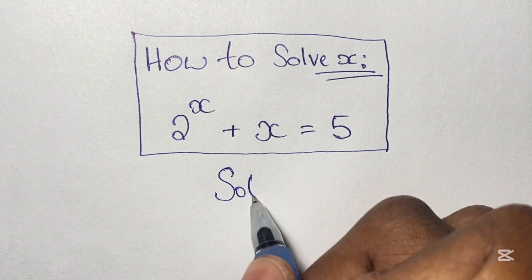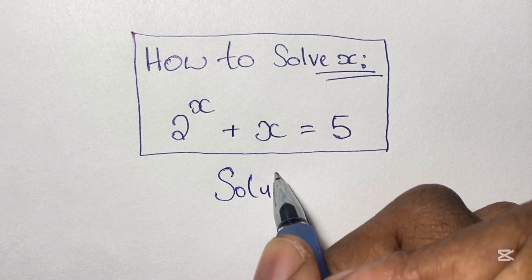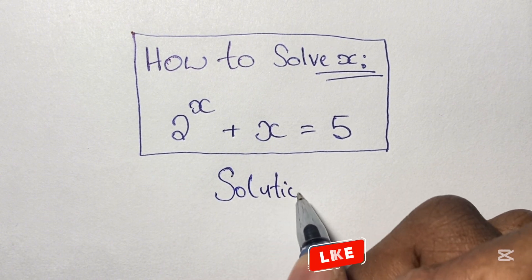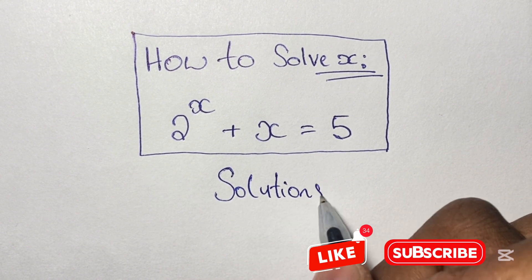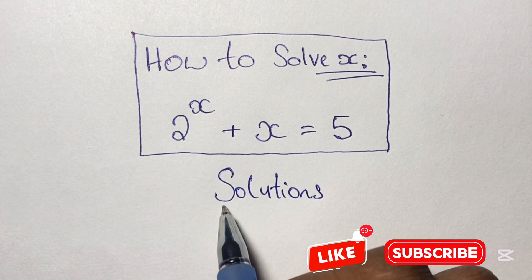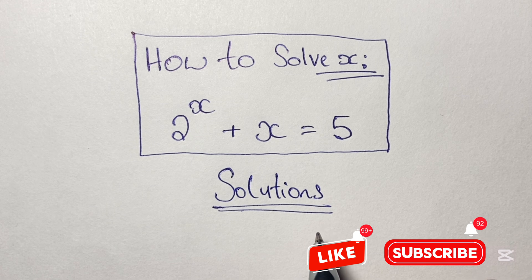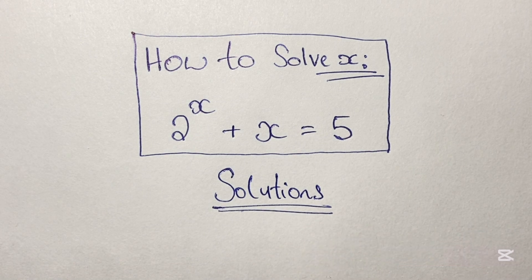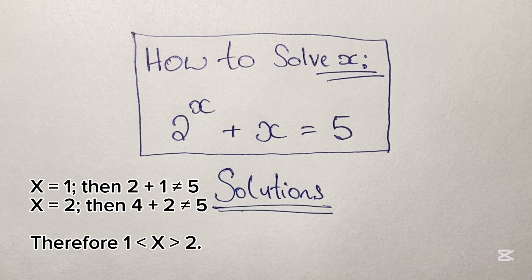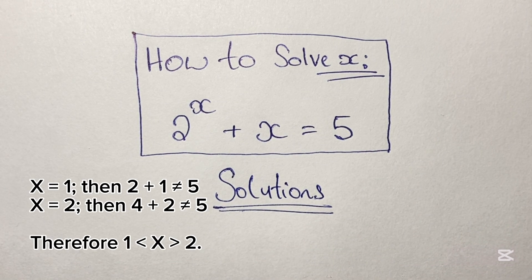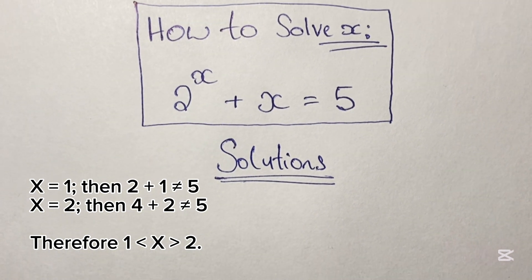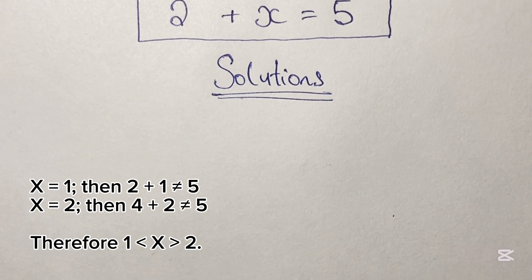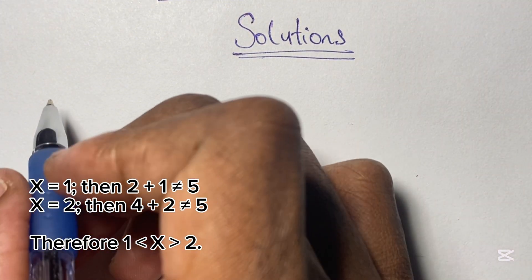You may want to save this video for future reference, so you can smash that like button and subscribe to my channel. Now looking at our equation, we can approximate the value of x by randomly selecting some numbers. By doing this we can see that x is equal to 1 point something.